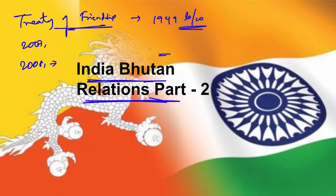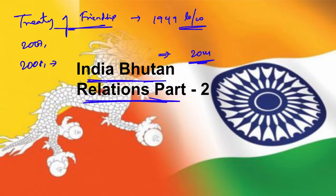Prime Minister Narendra Modi visited Bhutan in 2014. Bhutan is India's smallest neighbor, and this visit made it apparent that India acknowledges its special friendship with Bhutan. One reason was strategic — the landlocked Himalayan country lies on the borders with China, just south of Tibet. Another reason was Bhutan's large hydropower potential, which India has seen as a source of cheap electricity.